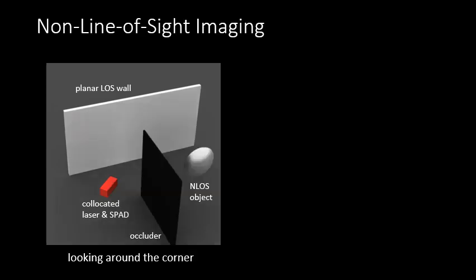The scene also contains an object that is outside the field of view and completely occluded from the sensor. We then want to use measurements captured by the sensor to reconstruct the shape of this object. We refer to this scenario as looking around the corner.